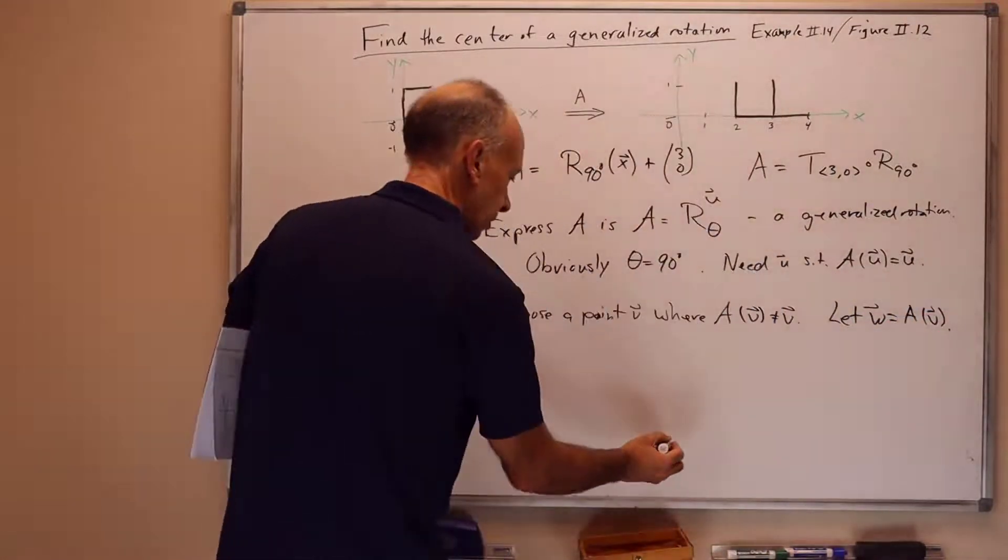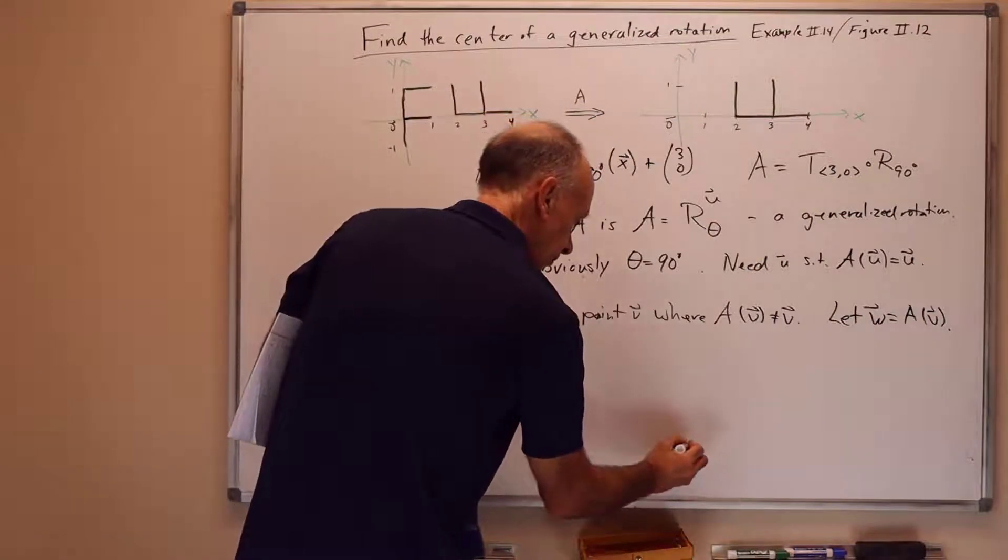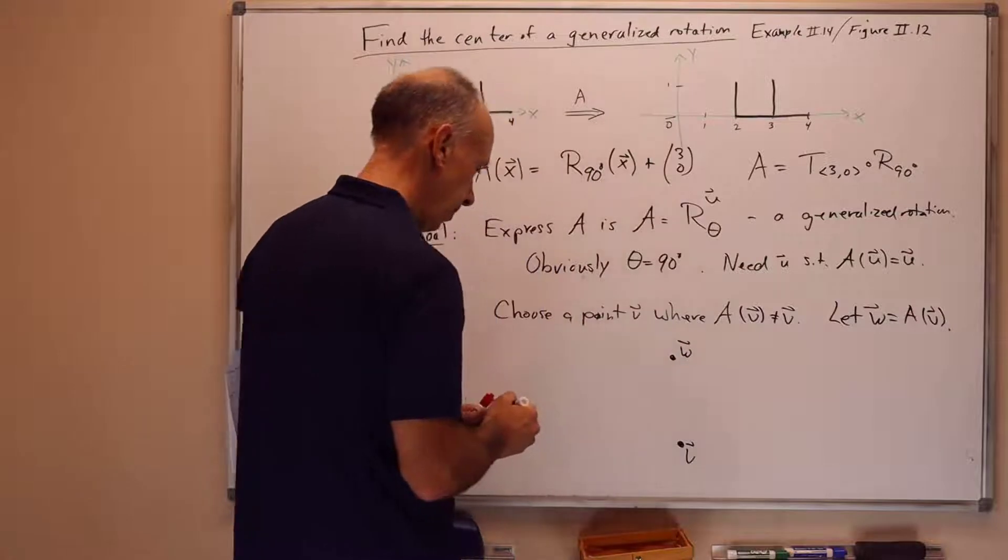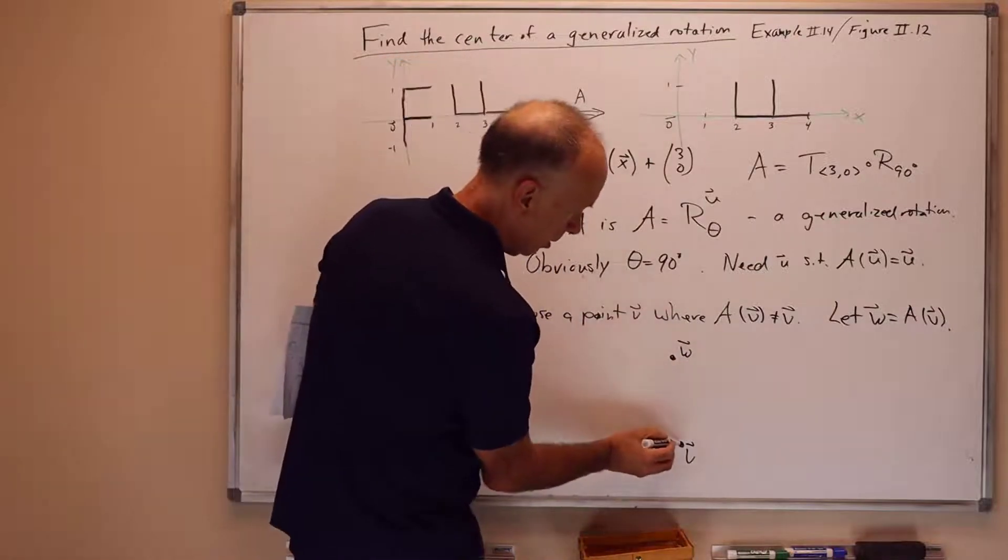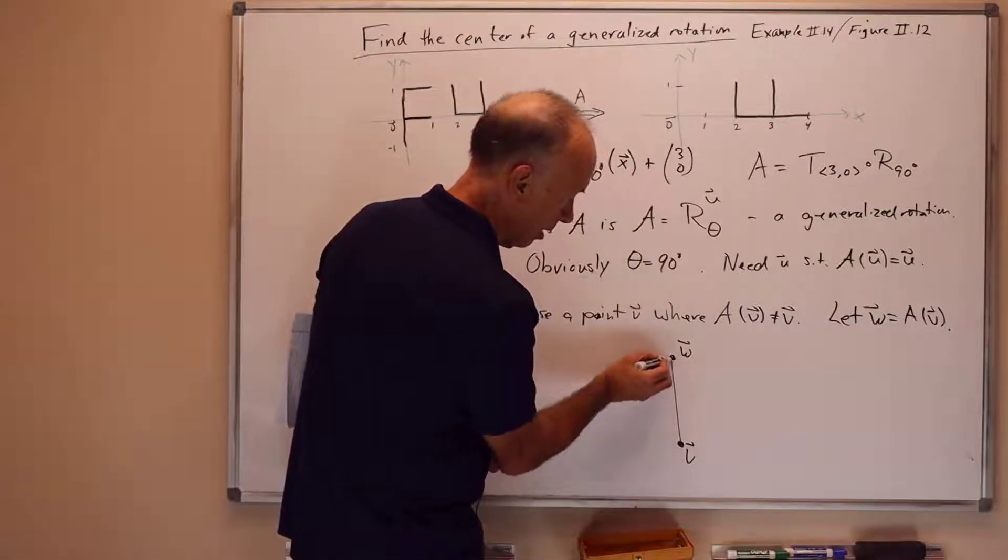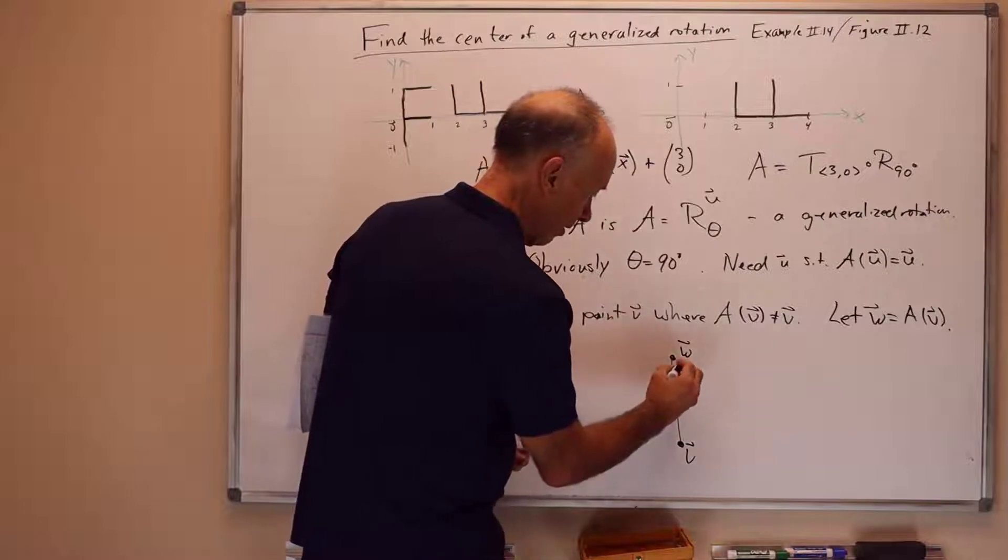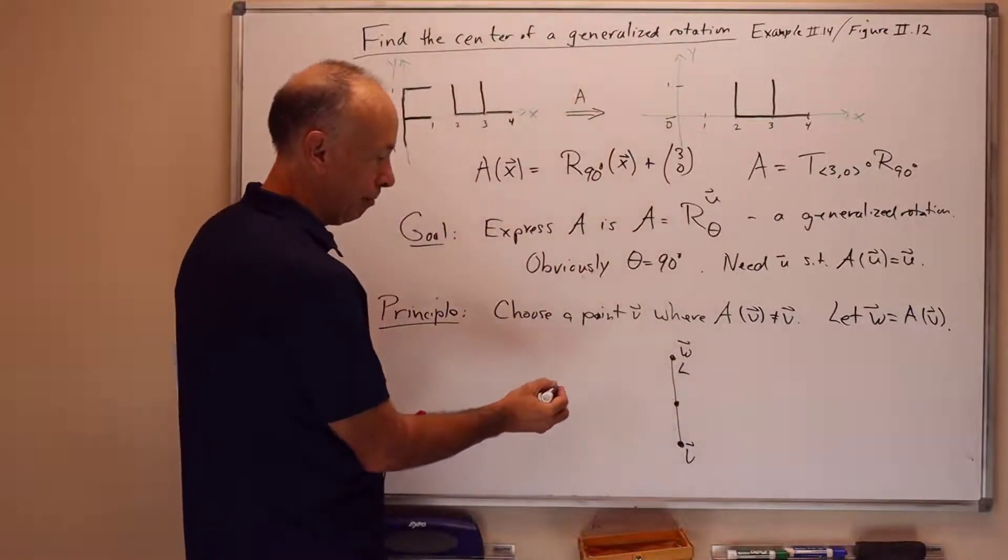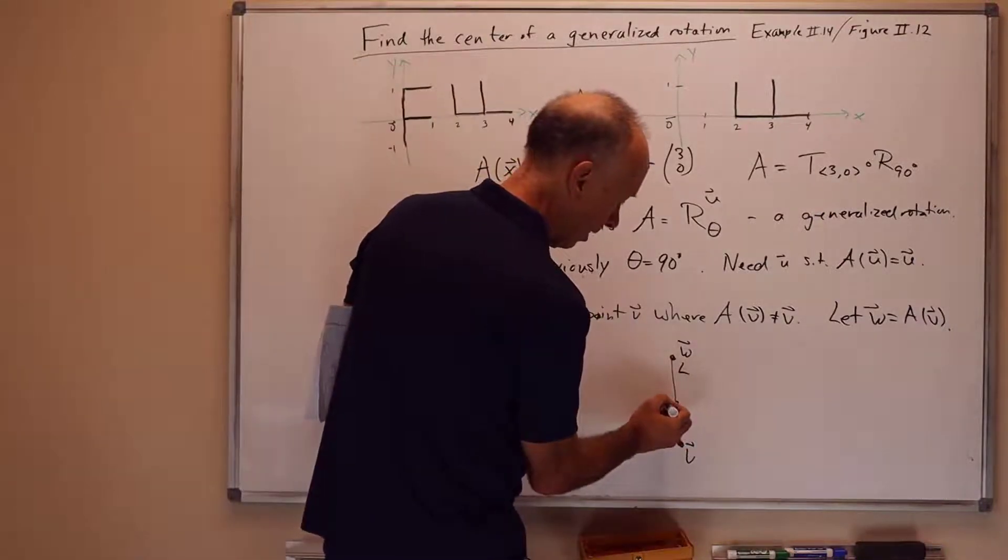So our picture is the following. We've got a point v. We've got a point w. We now form the line segment joining v and w, and I'll call that l. We take its midpoint, and we take the perpendicular bisector of that line.